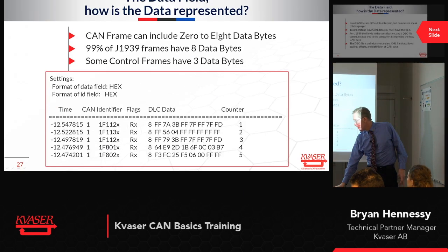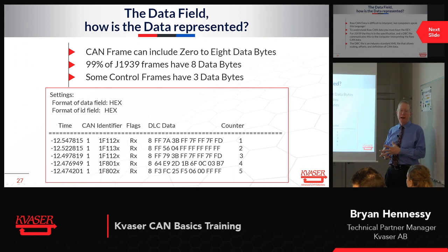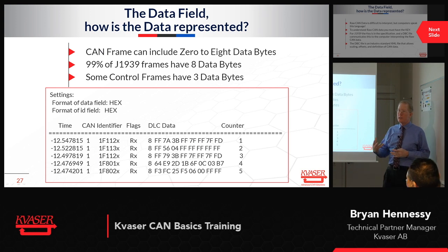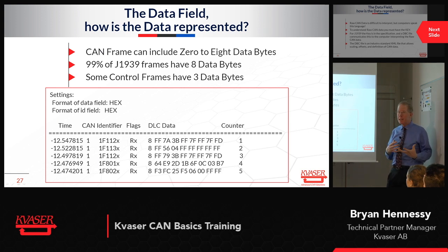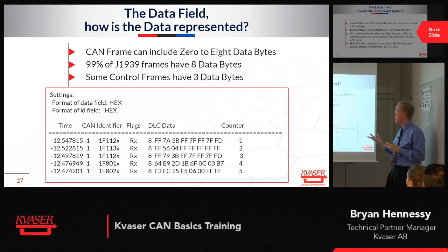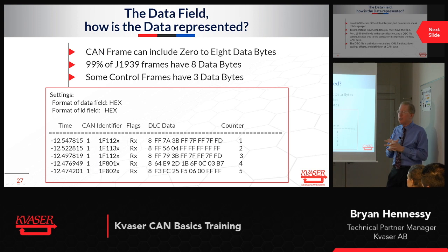When you talk about data, you have to talk about a DBC file, because that is the key — that is what explains to the systems what the data is. So the data field: how is the data represented? CAN frames include 0 to 8 data bytes. A classic CAN frame can't be more than 8 data bytes. In J1939, 99% of them have 8 data bytes, though there are some control frames that use 3 data bytes.